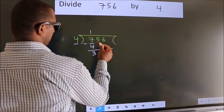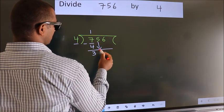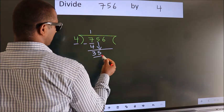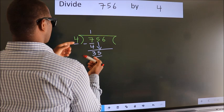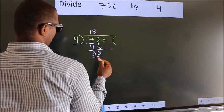After this, bring down the beside number. So, 5 down. So, 35. A number close to 35 in 4 table is 4 8s, 32.